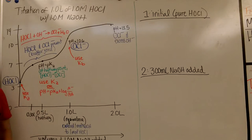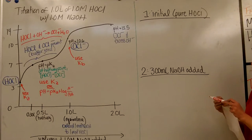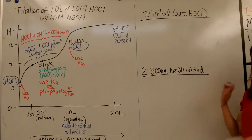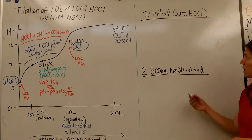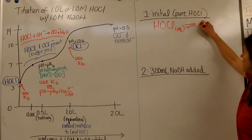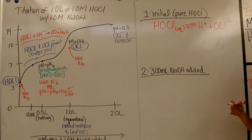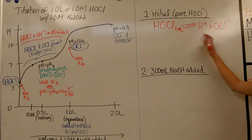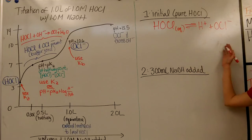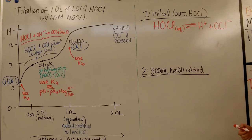Scenario number one: pure weak acid. I always recommend you write out whatever is happening in the equilibrium system. Initially, I've got pure weak acid. What's happening is my weak acid in water is going to dissociate a little bit. I drew a two-way arrow because it's a weak acid rather than a strong acid — they will be in equilibrium. If it had been a strong acid, I would draw a one-way arrow and all of it would turn into ions. But with a weak acid, there's going to be some of each species present.